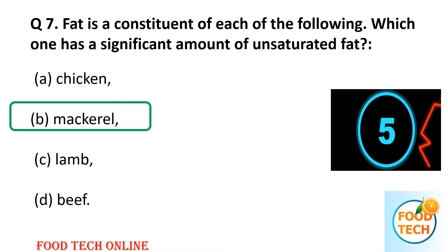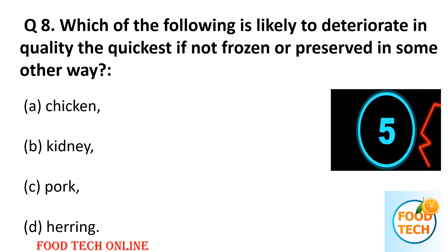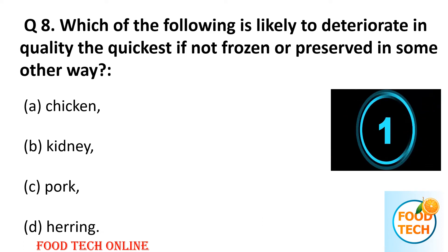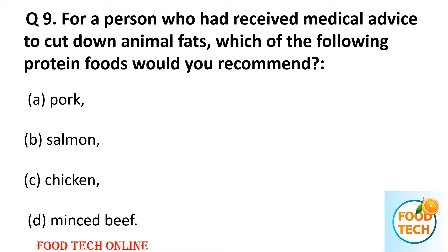Question 8: Which of the following is likely to deteriorate in quality the quickest if not frozen or preserved in some other way? A: chicken, B: kidney, C: pork, D: herring. Answer: D, herring.